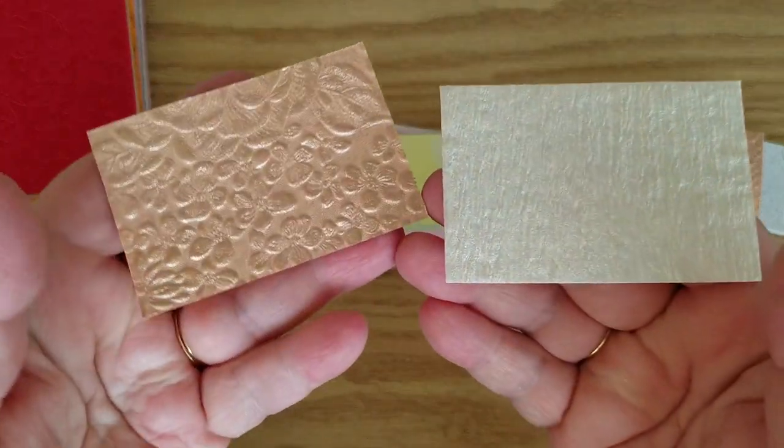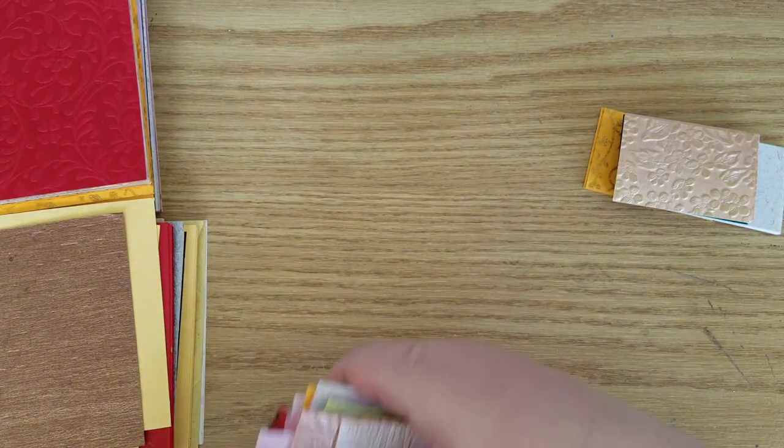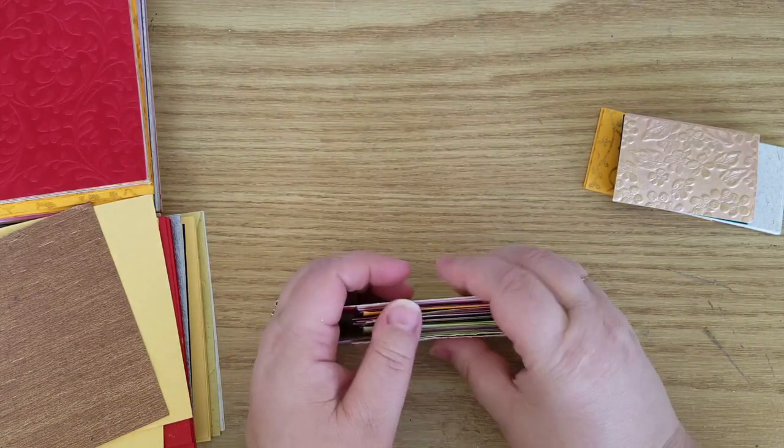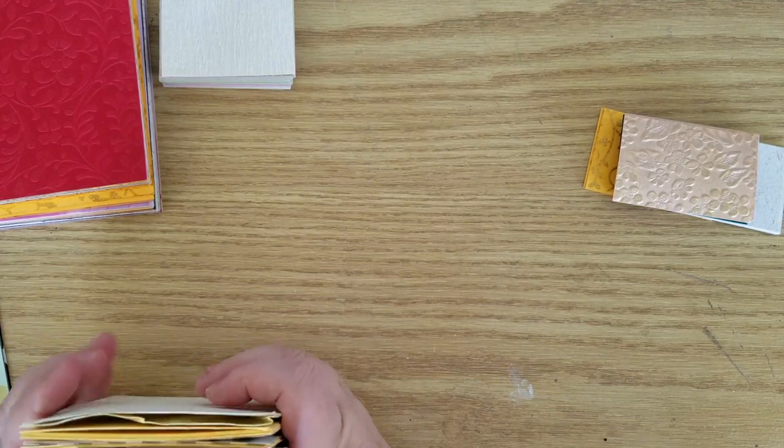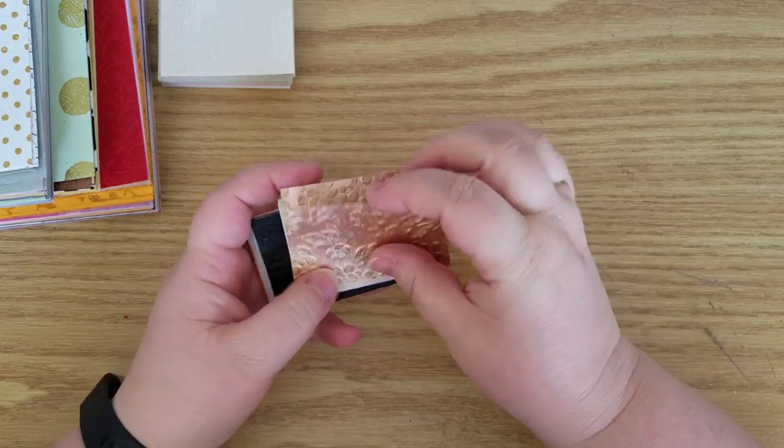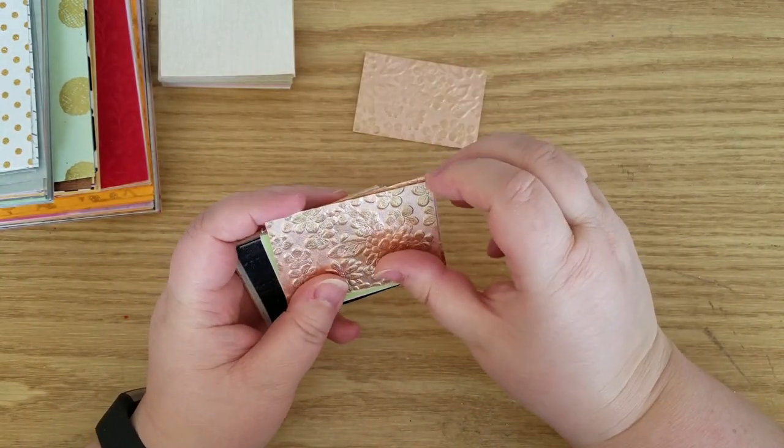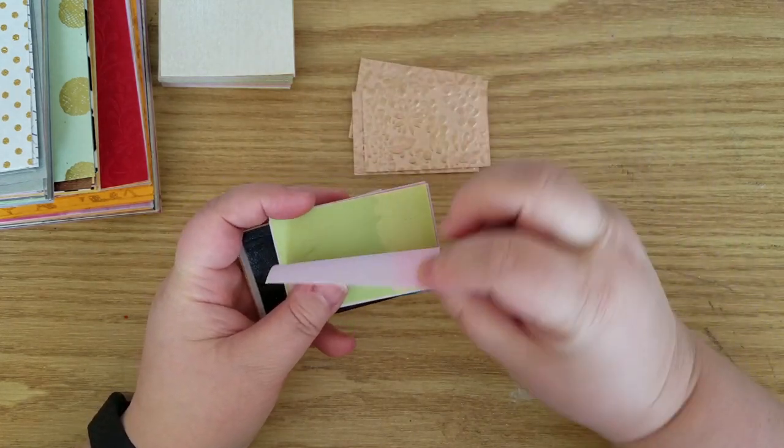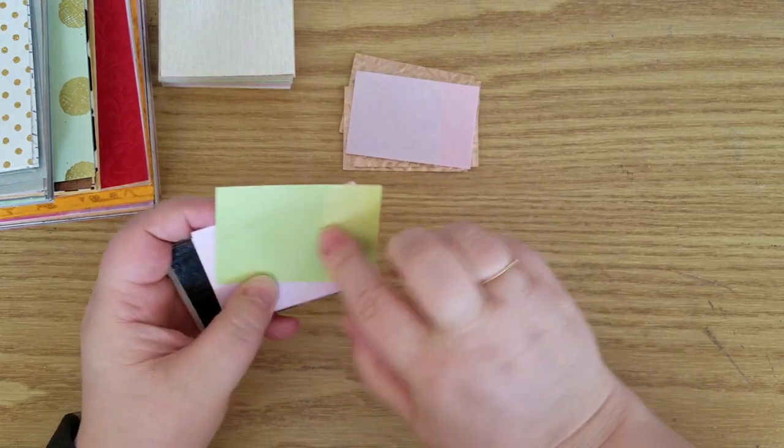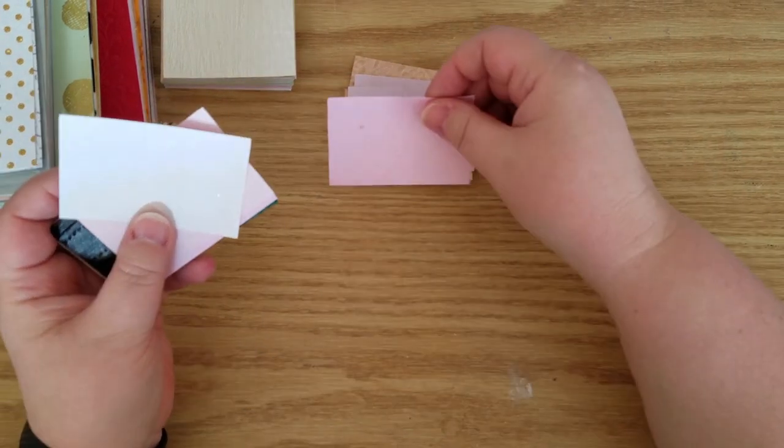I like these. These ones are really neat, the textures. And the last little pile, more of this textured. That's really cool. Kind of like a foil look thing with the embossing on it. I really like those.